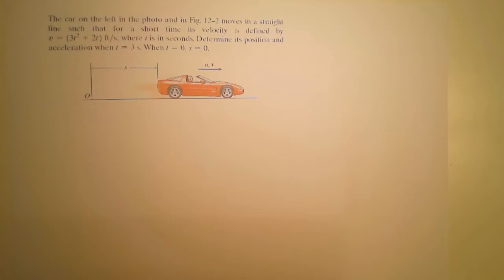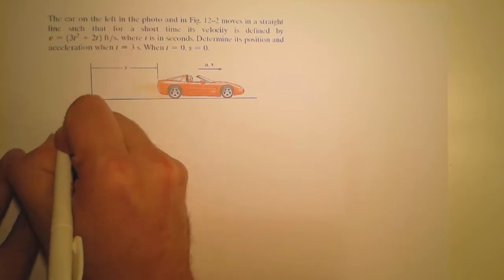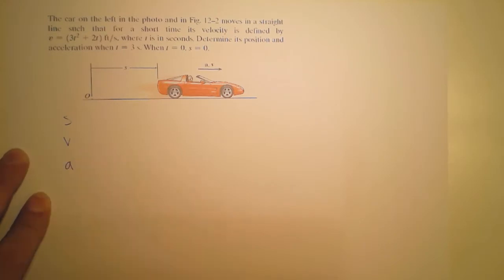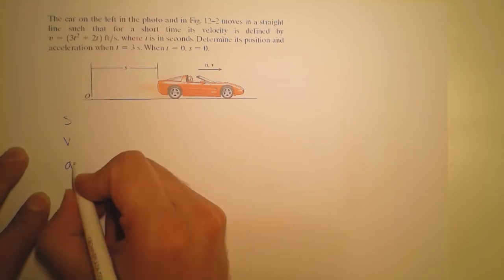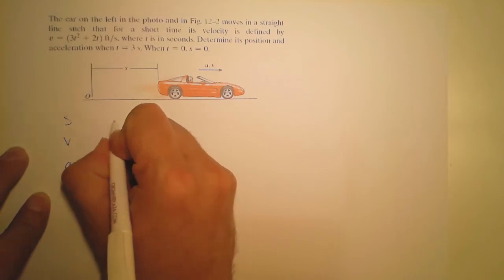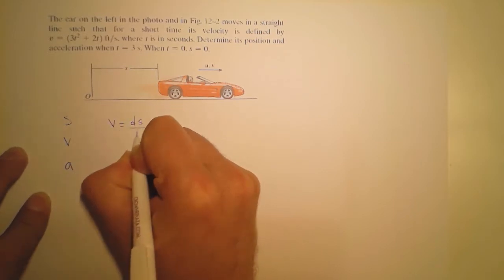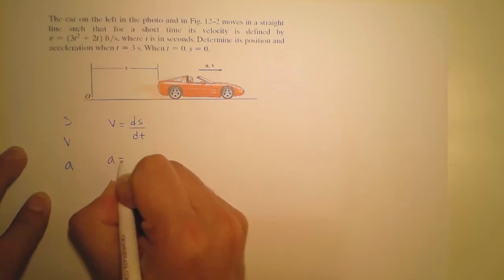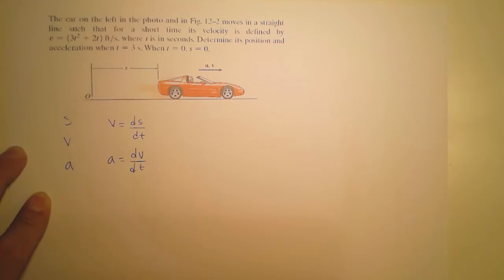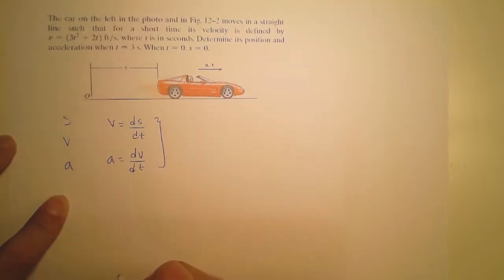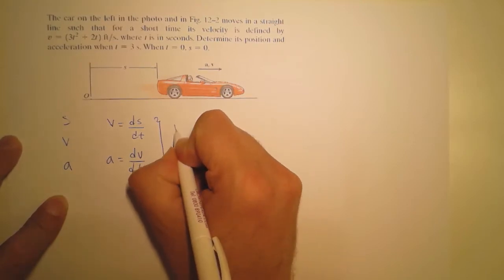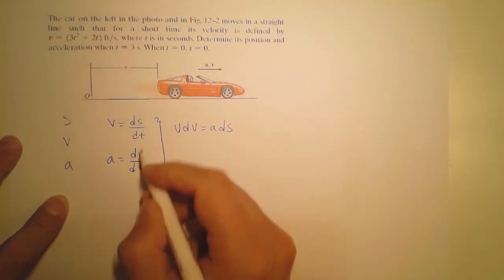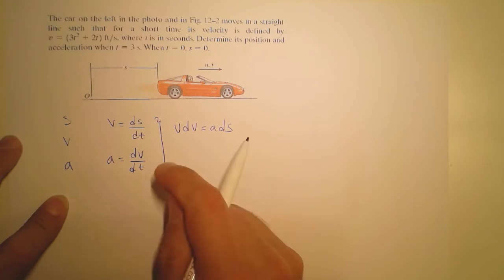When talking about kinematics, we discuss the position, the velocity, and the acceleration. The fundamental relationships are: v equals ds over dt, acceleration is the derivative of velocity with respect to time, and from these two we derive a third relationship independent of time: v dv equals a ds. These are the three fundamental equations for describing the kinematics of a moving particle.